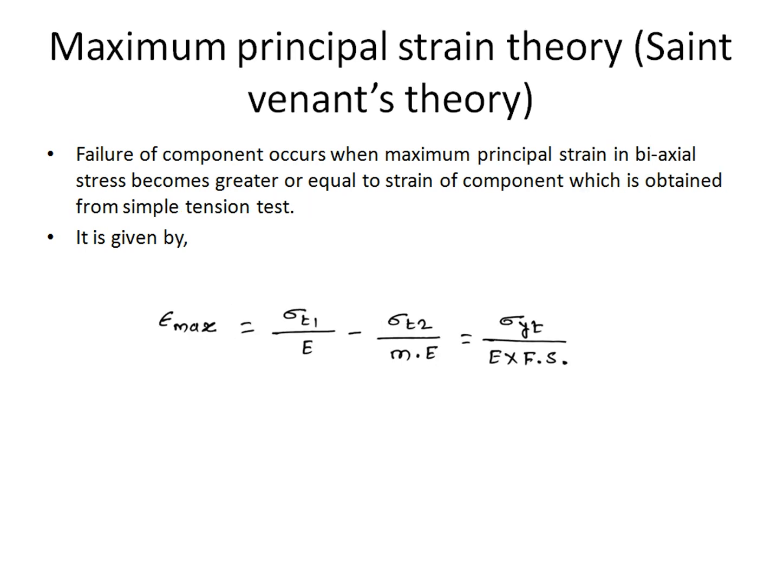The maximum principal strain theory, also known as Saint-Venant's theory, states that failure occurs when the maximum principal strain in the biaxial stress system equals or exceeds the strain obtained from a simple tension test. It is given by: εmax = σt1/E − σt2/(M·E) = σyt / (E·fs), where E is Young's modulus and fs is the factor of safety.